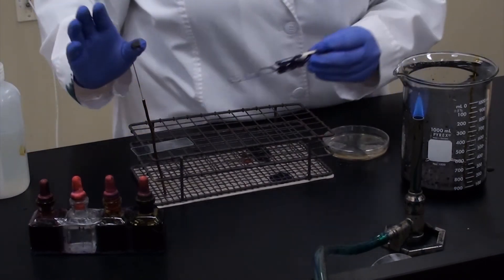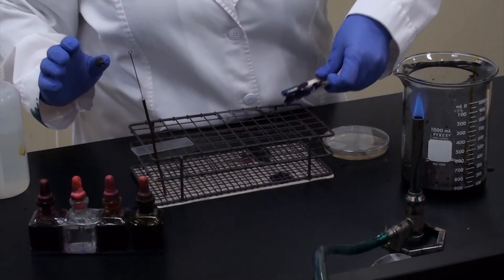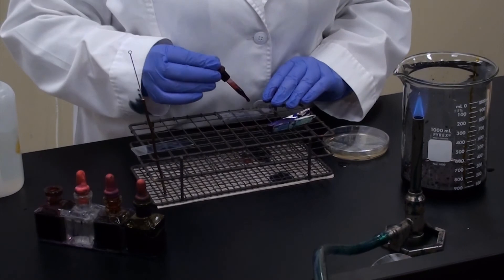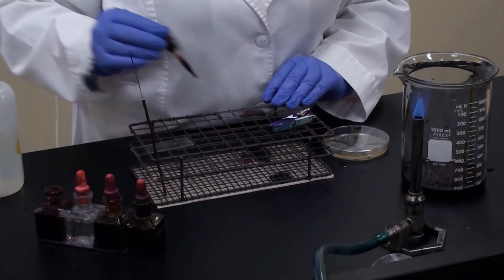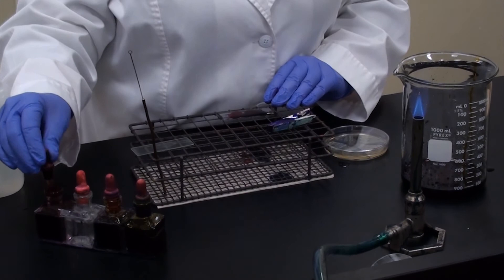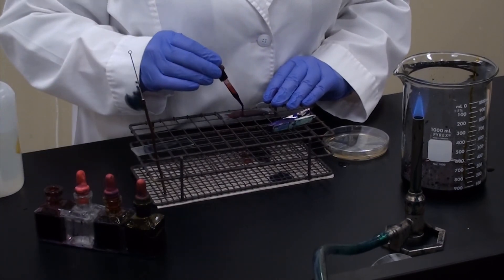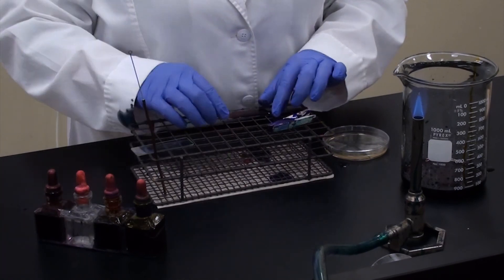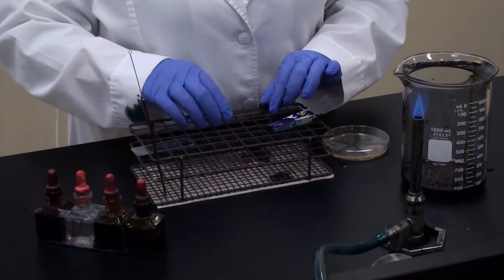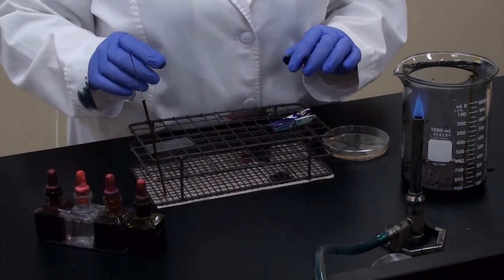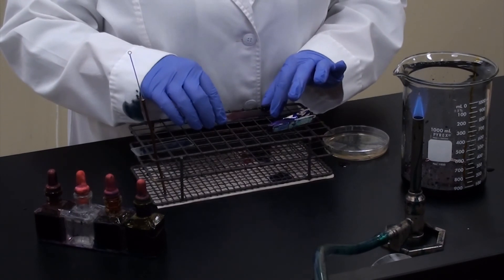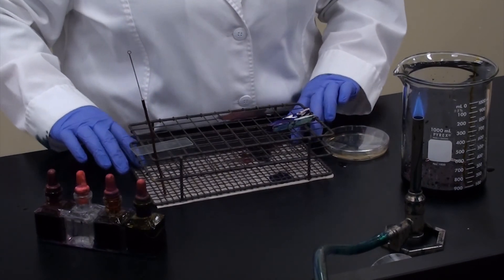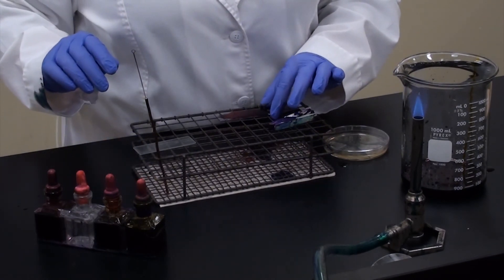And now I'm going to counter stain with saffronin, and that should stain my Gram-negative cells a nice reddish pink color. So any Gram-positive cells will have retained the crystal violet through the decolorizing step because of that nice, thick peptidoglycan layer and the crystal violet iodine complex that we made. You'll let that sit for about a minute.